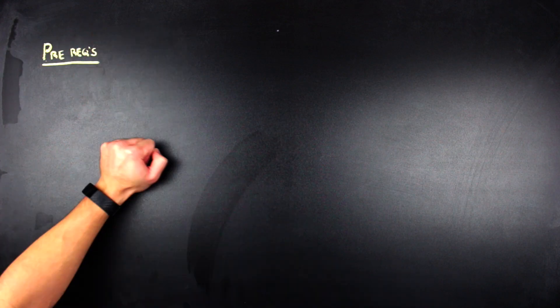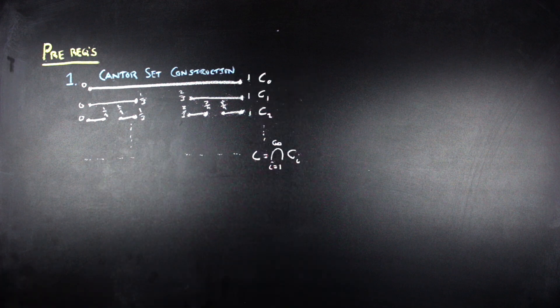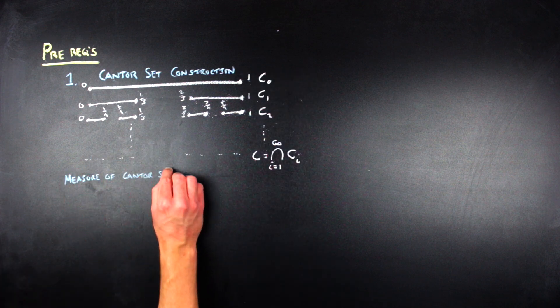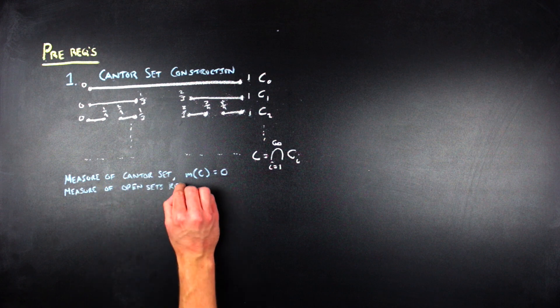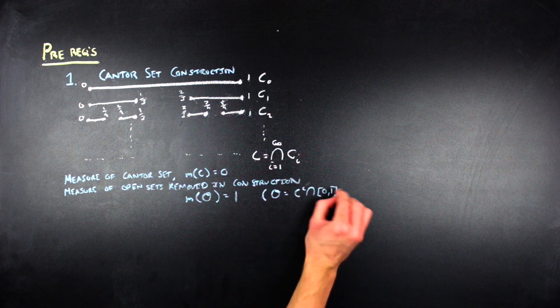In order to do that, there are some prerequisites that I need to refresh really quick. I will point out some videos in the cards up here where I've talked about these things before. The first prerequisite is that we know what the Cantor set construction on the closed interval from 0 to 1 is, and that the Cantor set has measure 0, as well as its complement, the open intervals removed during construction, have measure 1.